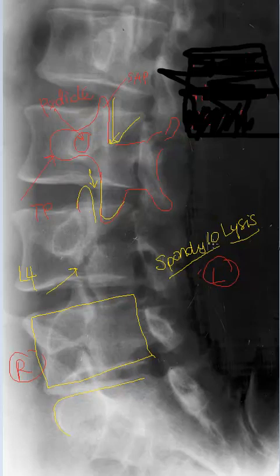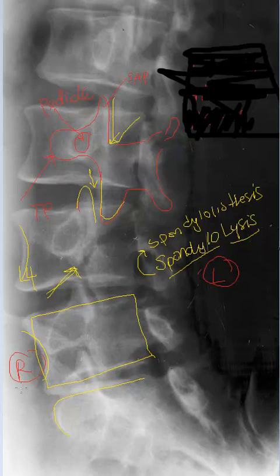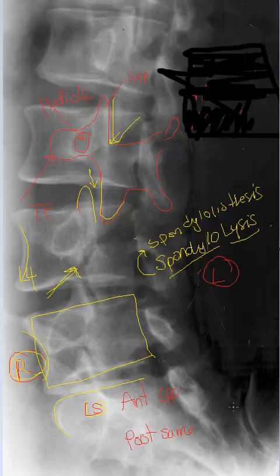These defects can lead to slippage of the vertebral segment, which we call spondylolisthesis. When pars inter articularis defects lead to vertebral body slippage, we call it spondylolytic spondylolisthesis. Without the lateral projection it is difficult to tell if this patient's vertebral segment has slipped. I suspect they have not, as the anterior margins of the vertebral bodies above and below are lining up quite nicely. In the lumbar spine, anterior obliques show us the opposite side and posterior obliques show us the same side, meaning this was either an RPO or an LAO.